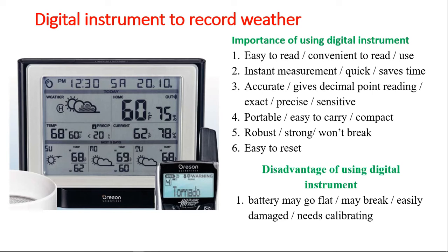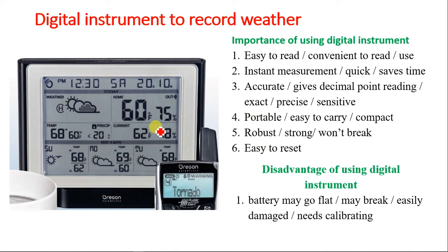The advantages of digital instruments are: they are easy to read — you just take your reading and write it down; instant measurement that is usually very accurate; portable and easy to carry; robust and strong so they won't break; and easy to reset for the next day's data. The disadvantages are: the battery may go flat; they can be easily damaged; and they always need calibrating.